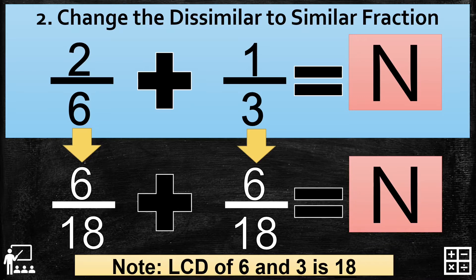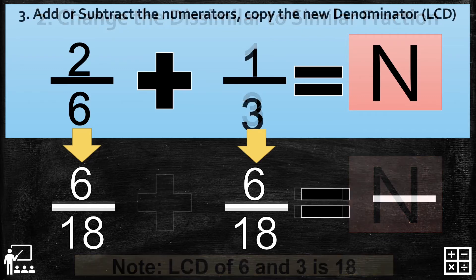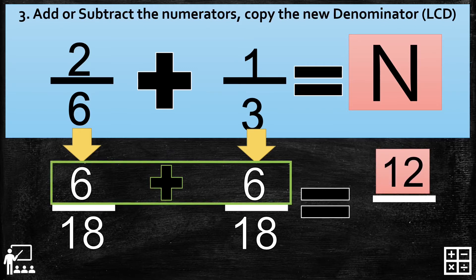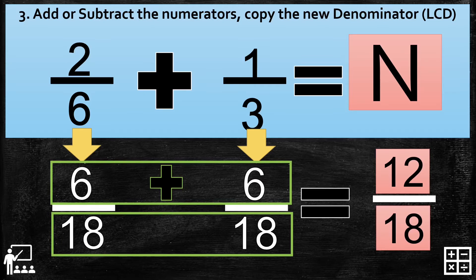If you notice, the original fractions had different denominators, but now on the bottom part they have the same denominator — we changed dissimilar to similar fractions. So let's proceed to step 3: add or subtract the numerators and copy the new denominator. We add 6 plus 6 to get 12, and copy the new denominator 18. Our answer is 12 over 18.